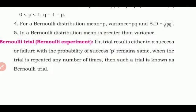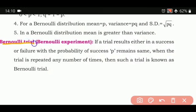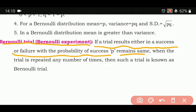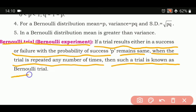A Bernoulli trial or Bernoulli experiment: if a trial results in either success or failure and the probability of success p remains the same when the trial is repeated any number of times, then such a trial is known as a Bernoulli trial. For example, tossing one coin repeatedly — the outcome is always either head or tail — is a Bernoulli trial.